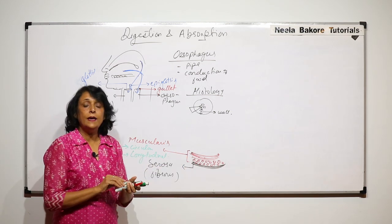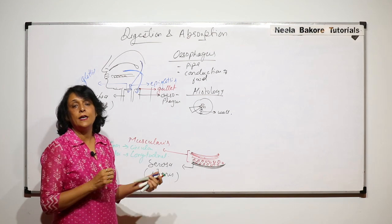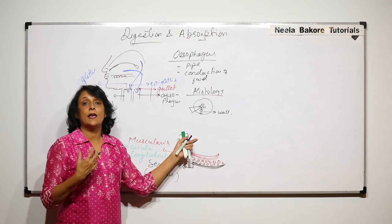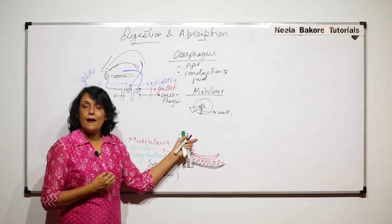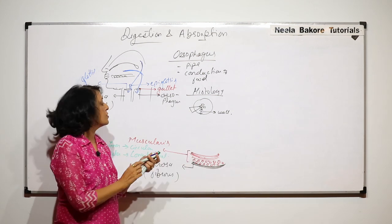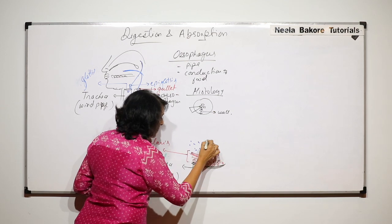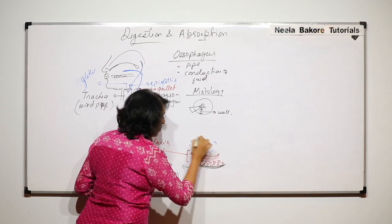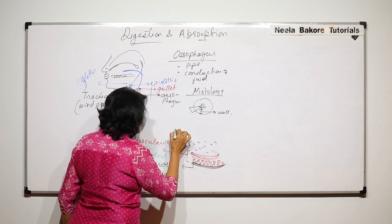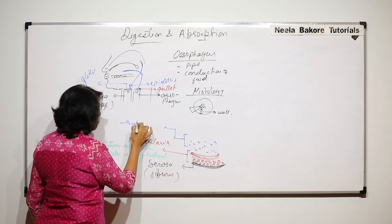The third layer is connective tissue — it is areolar tissue containing blood vessels, nerve fibers, and glands in different parts. We call this third layer the submucosa.